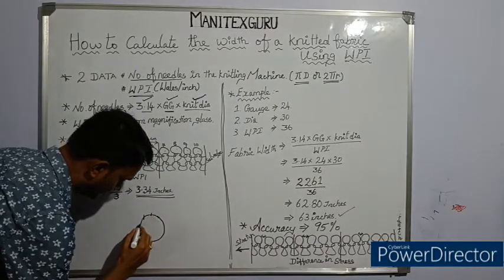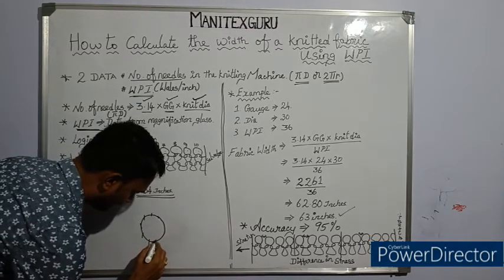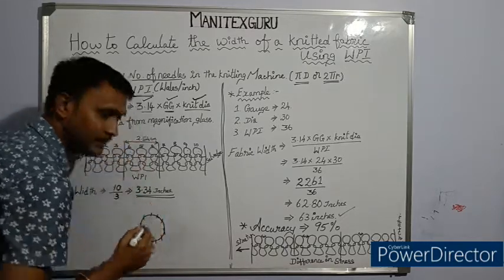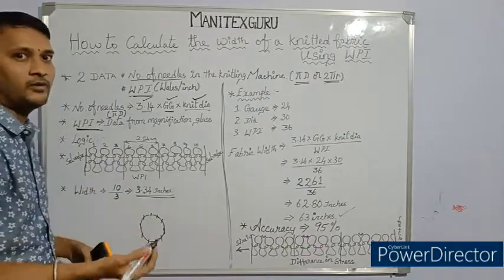One, two, three, four, five, six, seven, eight, nine, ten needles. And we all know each and every needle will form a loop.